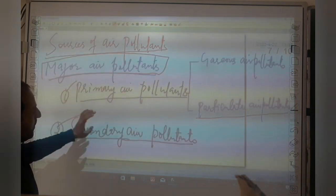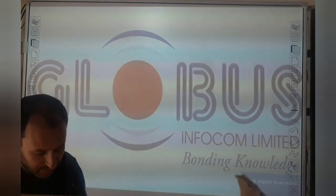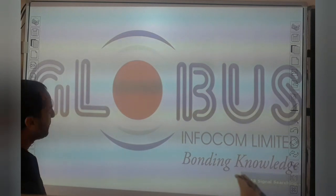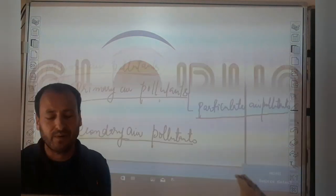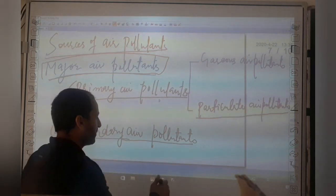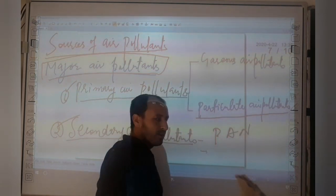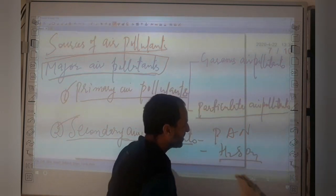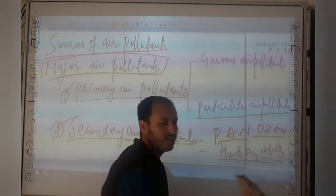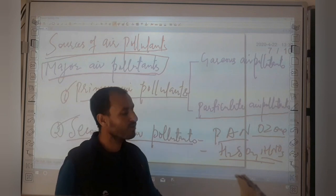Secondary air pollutants are those which come out from industries as primary pollutants but, after reacting with other primary pollutants or with the natural constituents of the atmosphere, get converted into secondary pollutants. These include peroxyacetyl nitrate (PAN), sulfuric acid (H2SO4), nitric acid, and ozone. These are the pollutants we consider as secondary sources of air pollution.